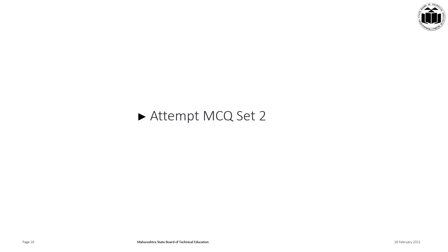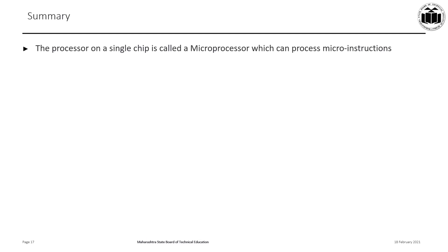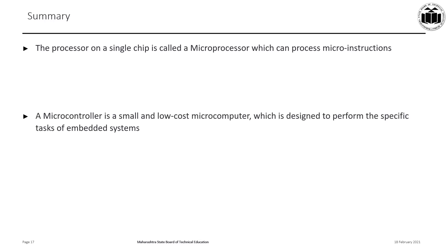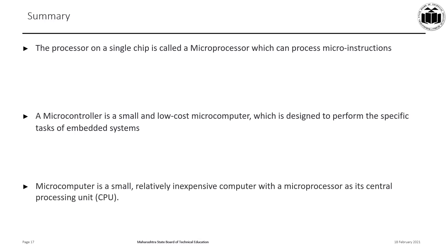It is quiz time again — please attempt MCQ set two. Summary: A processor on a single chip is called a microprocessor. A microcontroller is a small, low-cost chip designed to perform specific tasks in embedded systems, with on-chip ROM, RAM, I/O ports, timers, and a CPU. A microcomputer is a small computer itself, relatively inexpensive, with the microprocessor as its central processing unit. Thank you.